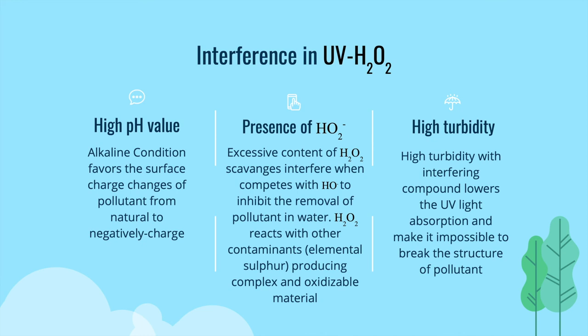The third factor that could interfere with the UV peroxidation process is high turbidity. High turbidity with interfering compounds can lower UV light absorption and make it impossible to break the structure of the pollutant.